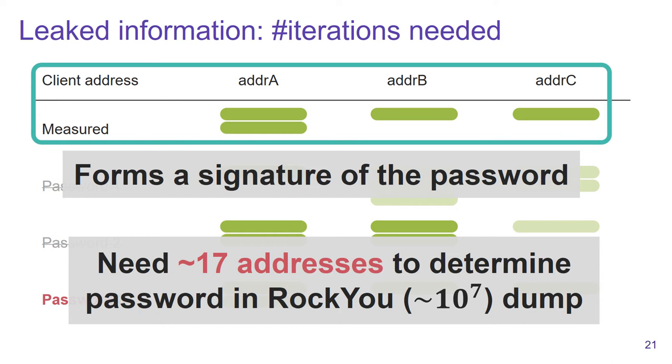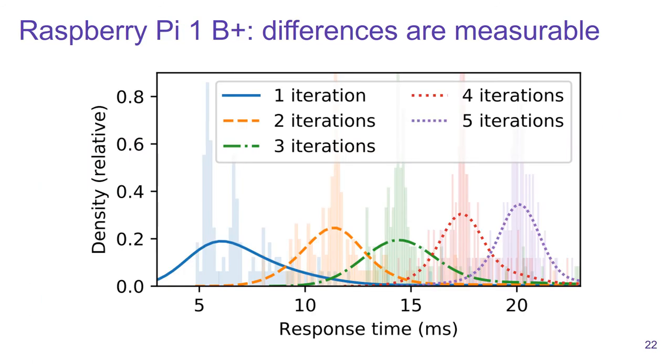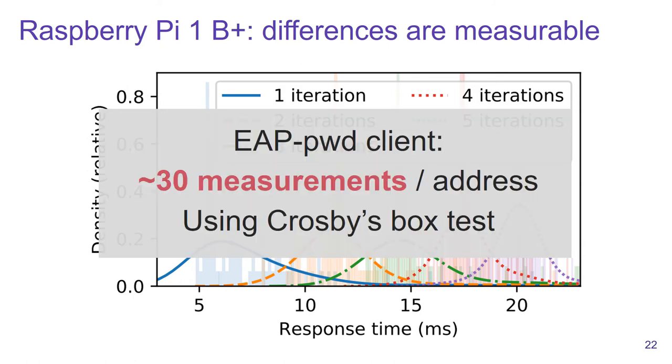Now, there is one thing that I haven't explained yet. Can we indeed measure how many iterations an access point or a client executes? To answer this, we attacked a Raspberry Pi 1B which was running an open source implementation. We measured the number of iterations that are executed, and it turns out this is fairly easy to do. Against an EAP-PWD client, we only need 30 measurements to determine how many iterations are being executed when we use Crosby's box test to filter out noise.